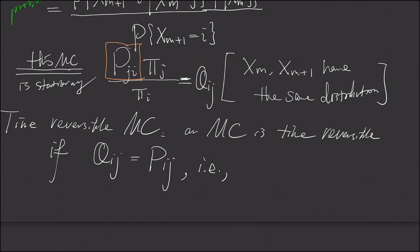And we can see that if Q_ij here is P_ij, then we obtain a very straightforward equation. That is π_j times P_ji equals, because this Q_ij is P_ij, so we have this is π_i times P_ij. And this is the equation for the time reversible Markov chain.